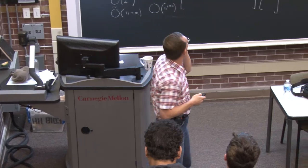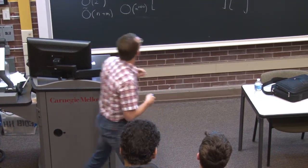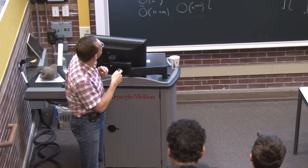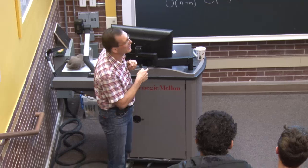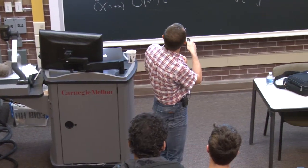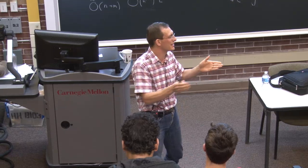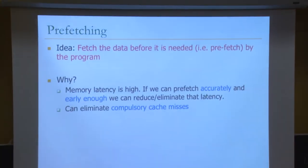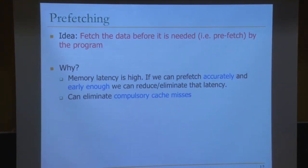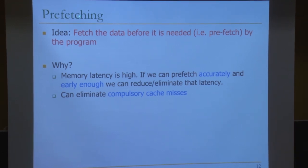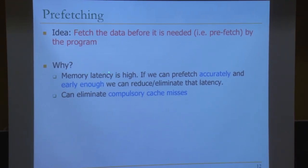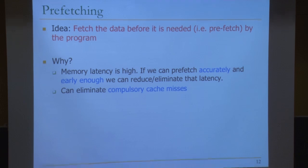The idea is very simple: fetch the data before it's needed by the program. Why? The latency of fetching data is high. If we can preload it accurately and early enough, we can eliminate that latency. The big upside of prefetching is it doesn't need to have seen the data before — it's very different from caching, which requires you to have loaded data into your cache. Prefetching can eliminate compulsory cache misses; you don't need to have seen the addresses before.